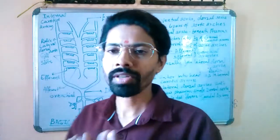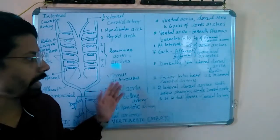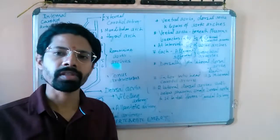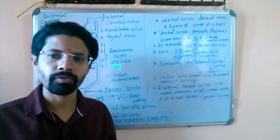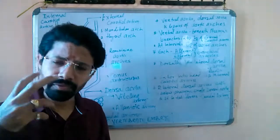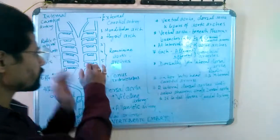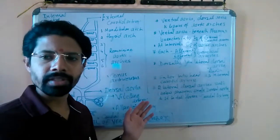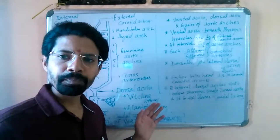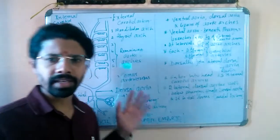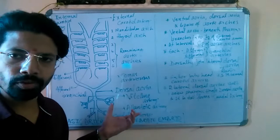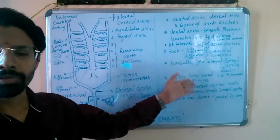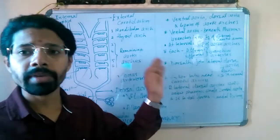Now some important points have been noted about the same diagram because we have to explain it in a very careful manner. In different vertebrates, some of these aortic arches are differently modified — some of them are present, some of them are absent — but the basic plan is like this. This is the basic plan and the basic introduction of aortic arches in the vertebrate embryo.